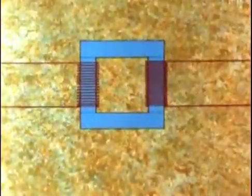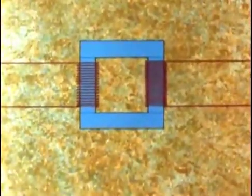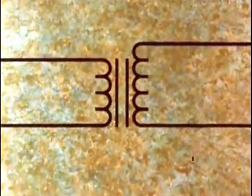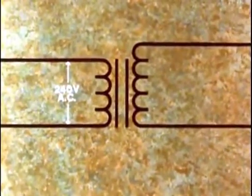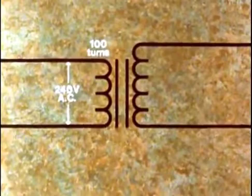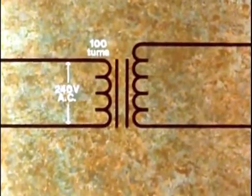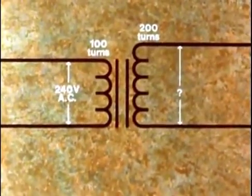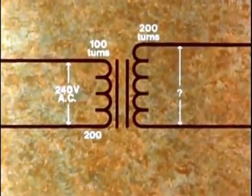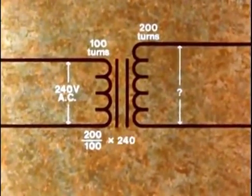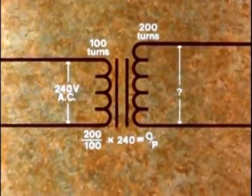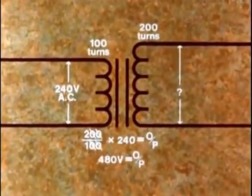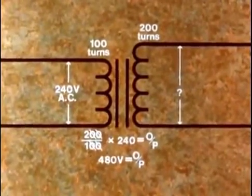All right, let's try another example. And this time we will use the symbol for a transformer used in circuit diagrams, two coils and a core. Let's take an input voltage of 240 volts AC alternating in a primary of 100 turns. And let's take a secondary of 200 turns. What will the output voltage be? Well, the number of secondary turns divided by the number of primary turns times the input voltage equals the output voltage. So the output voltage is 480 volts AC. And we have again a step up transformer.